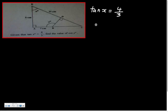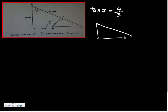Let me roughly sketch out the triangle. This angle here is x. Tangent equals opposite over adjacent. If x is this angle, the opposite side will be 4 and the adjacent side will be 3 — so 4 over 3.